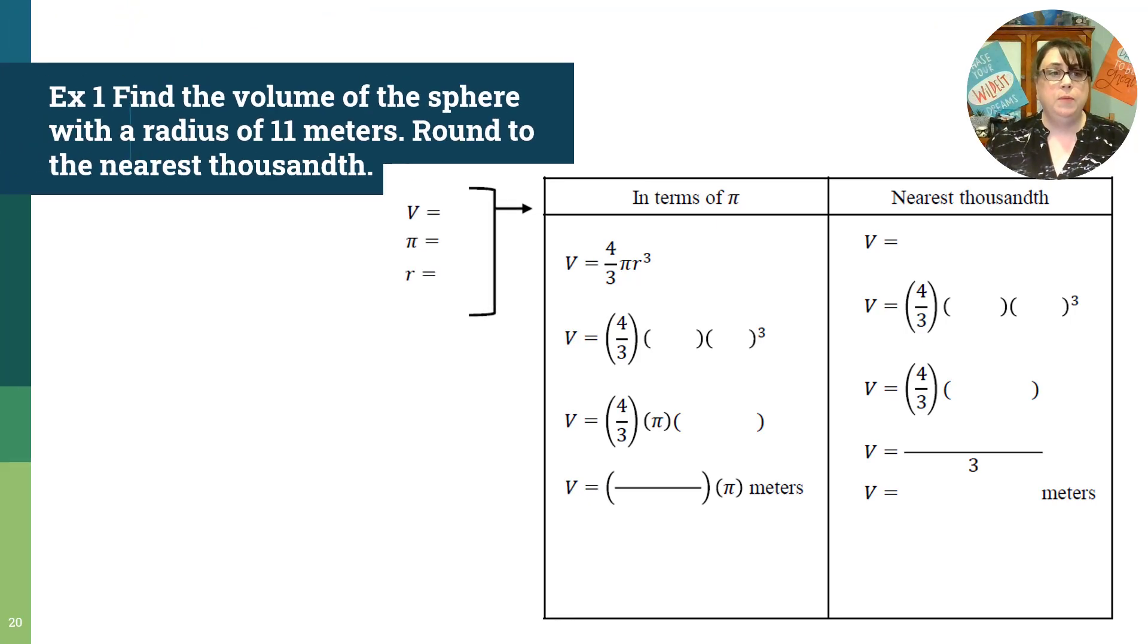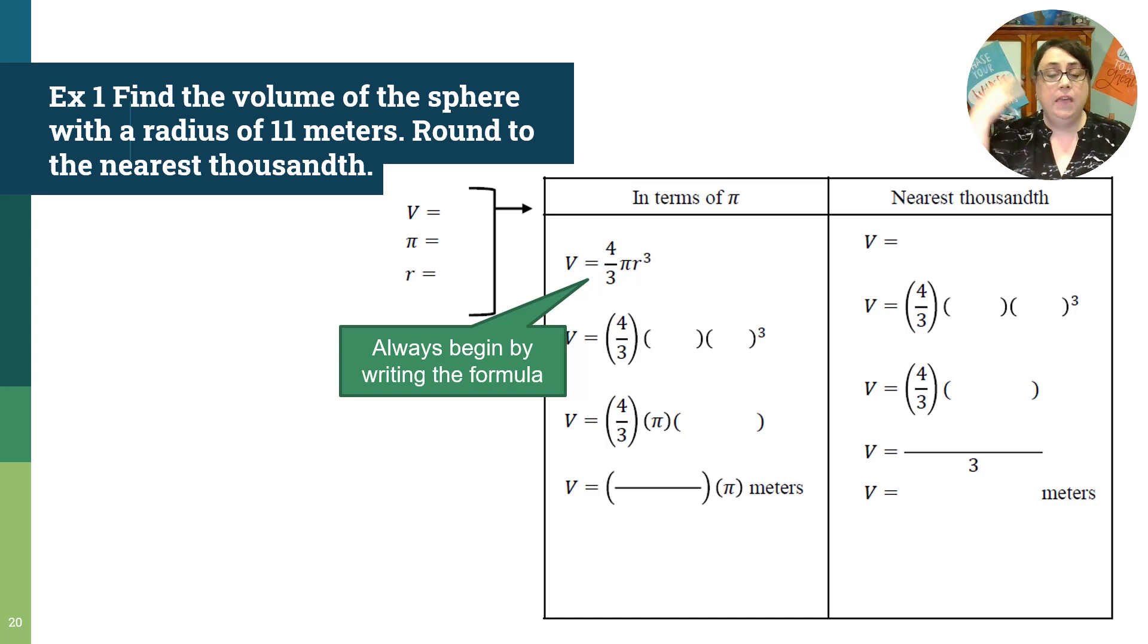Example one: find the volume of a sphere with a radius of 11 meters and round to the nearest thousandth. I have it set up so you can see it in terms of pi and the nearest thousandth side by side. The first thing that you need to do is write down that formula. You free up your head for the thinking by writing down those memorizations.